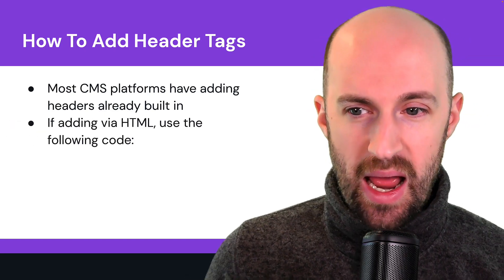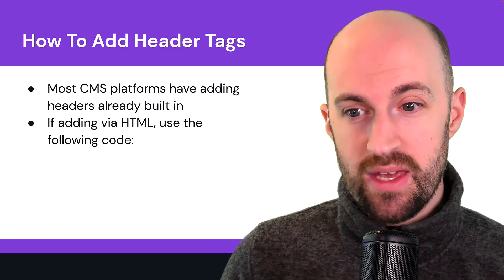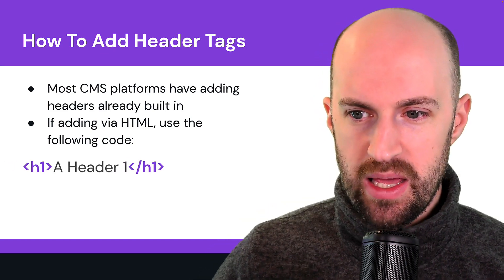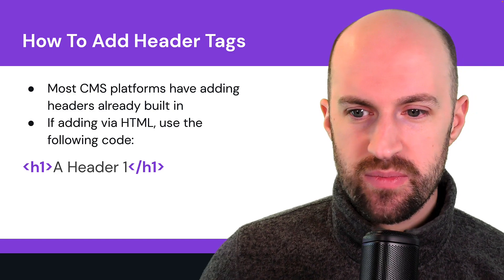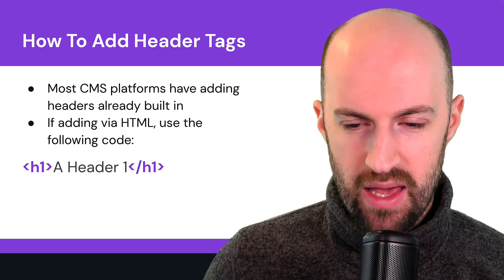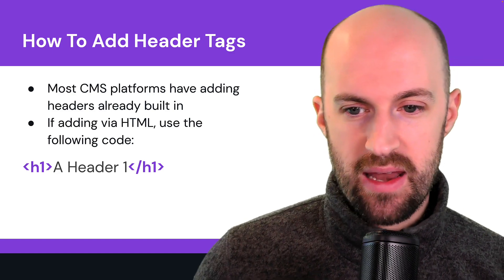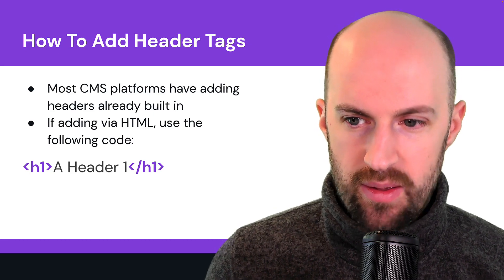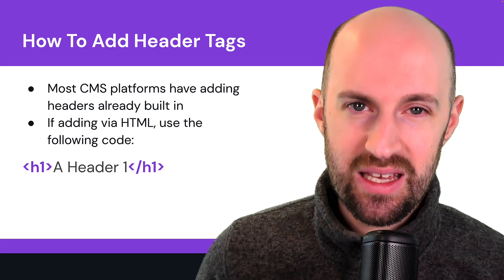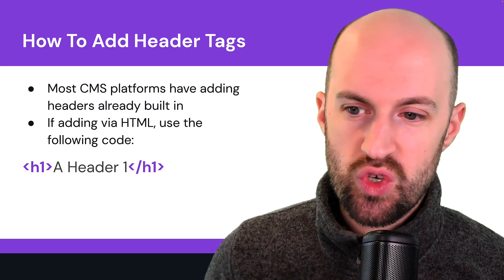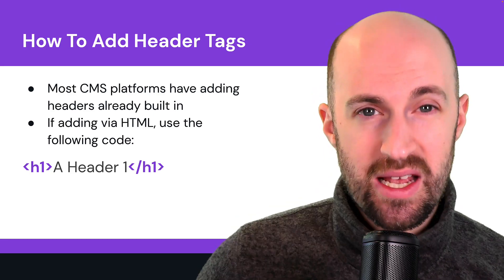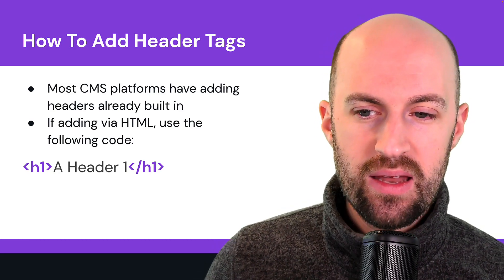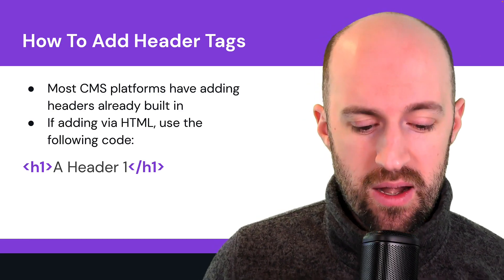If you're adding via HTML, then use the following code. It'd be the opening h1 tag, then put the text for the header, then the closing h1 tag with a slash. Replace the number with the heading level — so it could be h2, h3, all the way to h6. And that basically forms the header.